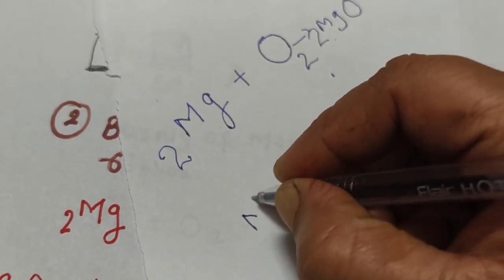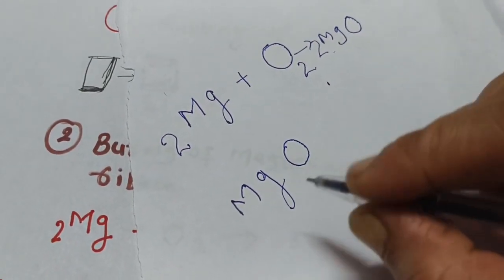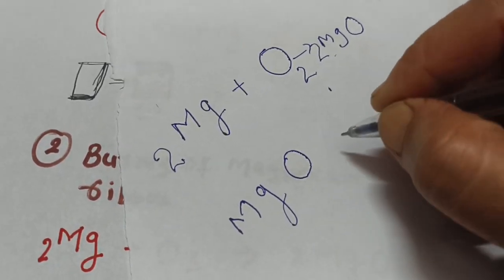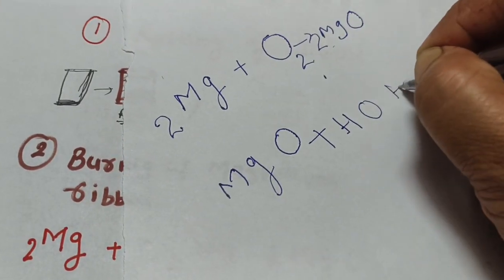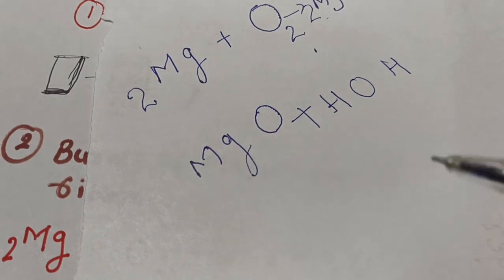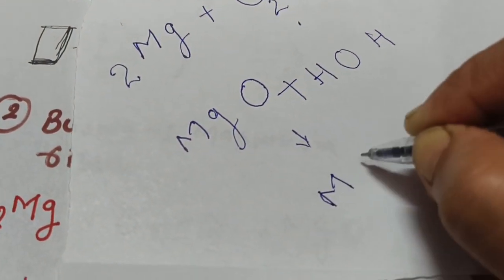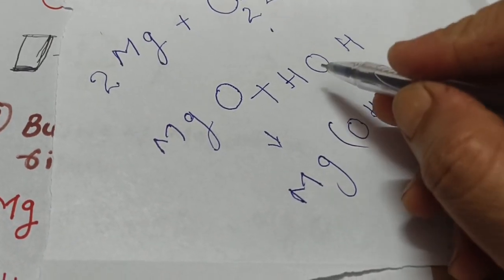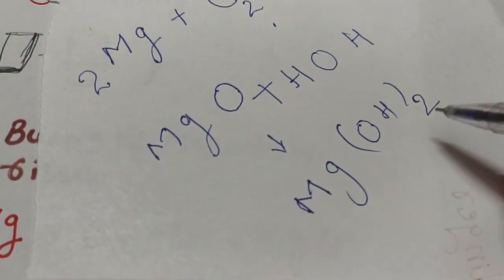Now let's see magnesium oxide. When any metal reacts with oxygen, it forms an oxide. When we react magnesium oxide with water (H2O), we have two hydrogen, two oxygen, and one magnesium. The formula will be Mg(OH)2 — magnesium hydroxide. I will make a video teaching you how to make the formula.